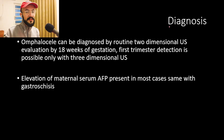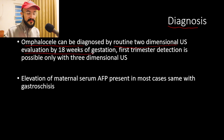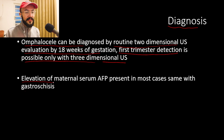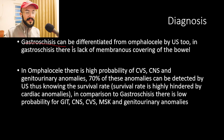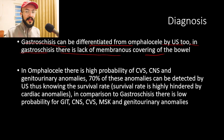Omphalocele can be diagnosed by routine two-dimensional ultrasound evaluation by 18 weeks of gestation, but first-trimester detection is possible only with three-dimensional ultrasound. Elevation of maternal serum alpha-fetoprotein is present in most cases. On ultrasound, gastroschisis can be differentiated from omphalocele: in gastroschisis there is lack of membrane covering the bowel, while in omphalocele there is a membrane present.